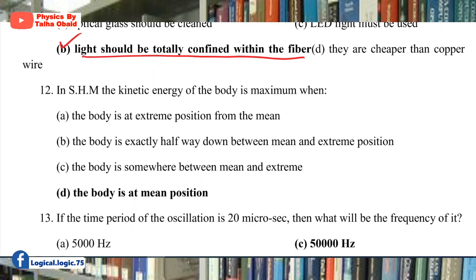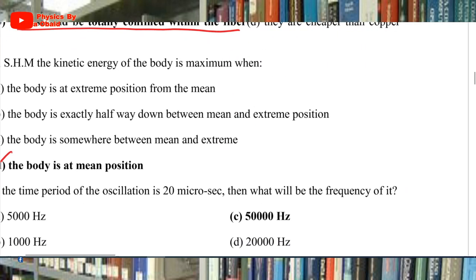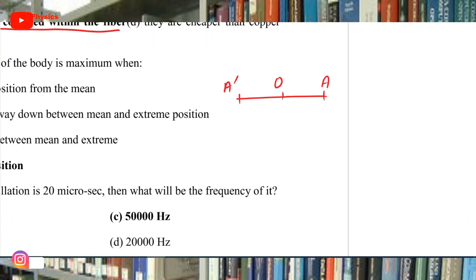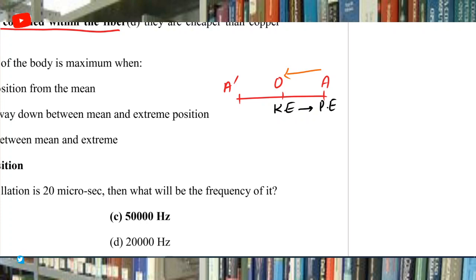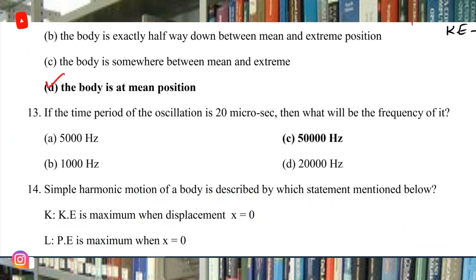Question 12: In simple harmonic motion, kinetic energy of the body is maximum when the body is at the mean point. At extreme points, potential energy is maximum. When the body moves from mean to extreme, KE converts to PE; from extreme to mean, PE converts to KE. But the sum of both energies always remains the same.